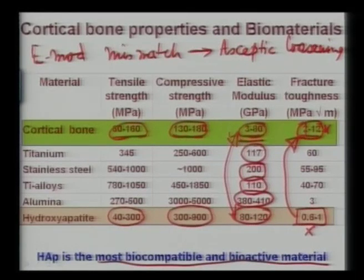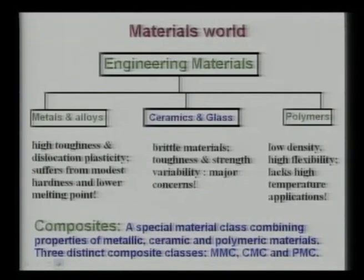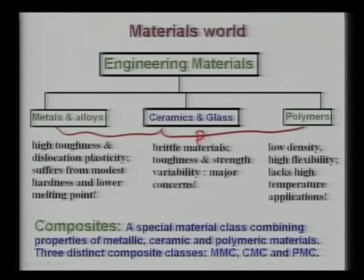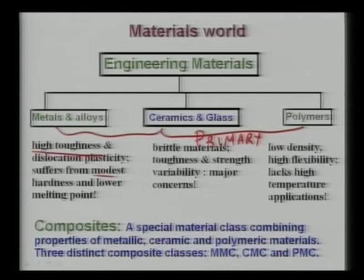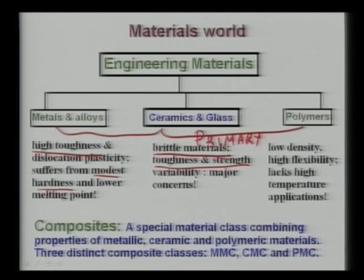Coming to the different material classes: metals, ceramics, and polymers are the primary material classes, each with advantages and limitations. Metals and alloys have very high toughness but modest hardness compared to ceramics. Ceramics have concerns with toughness and strength variability — they are essentially brittle. Polymers have low density and high flexibility but lack high-temperature capability, though this is not relevant for biomaterials applications.